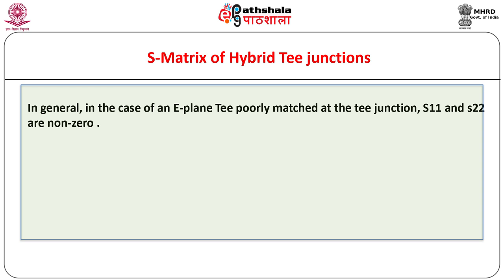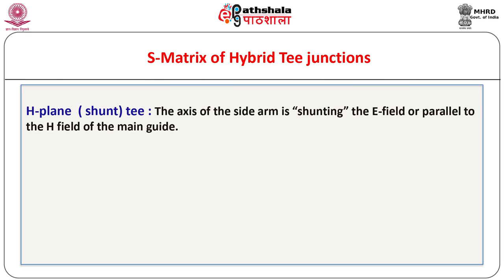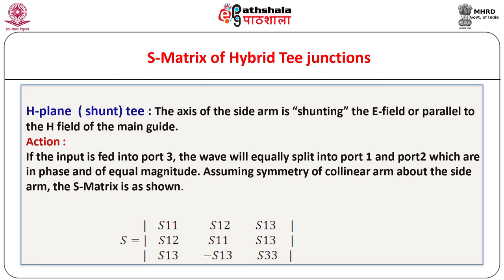In general in the case of an E-plane T poorly matched at the T junction, S11 and S22 are nonzero. If the collinear arm of the T is symmetric about the side arm, the S matrix is given by the expression as shown. We can have an H-plane T also known as shunt T as shown. In this type of T the axis of the side arm is shunting the E field or parallel to the H field of the main guide. If the input is fed into port 3 the wave will equally split into port 1 and port 2, which are in phase and of equal magnitude. Assuming symmetry of collinear arm about the side arm, the S matrix is as shown.